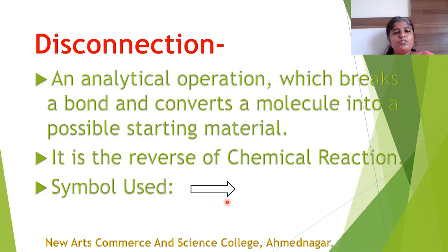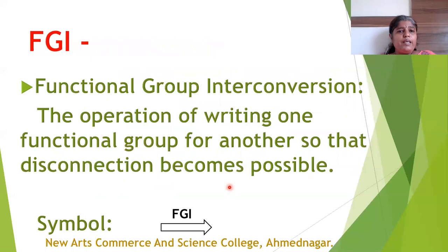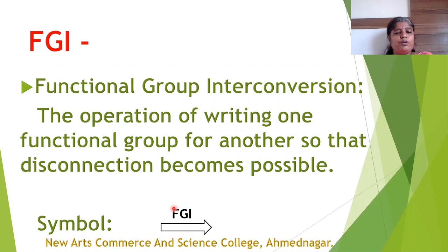The symbol used for disconnection is a reverse arrow. The next term used is Functional Group Interconversion, abbreviated as FGI. This is the operation of writing one functional group for another so that disconnection becomes possible. The symbol used for FGI is also a reverse arrow with FGI written over it.